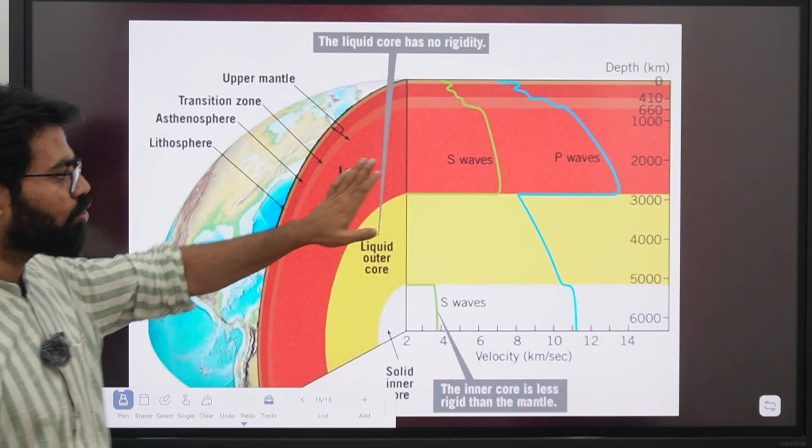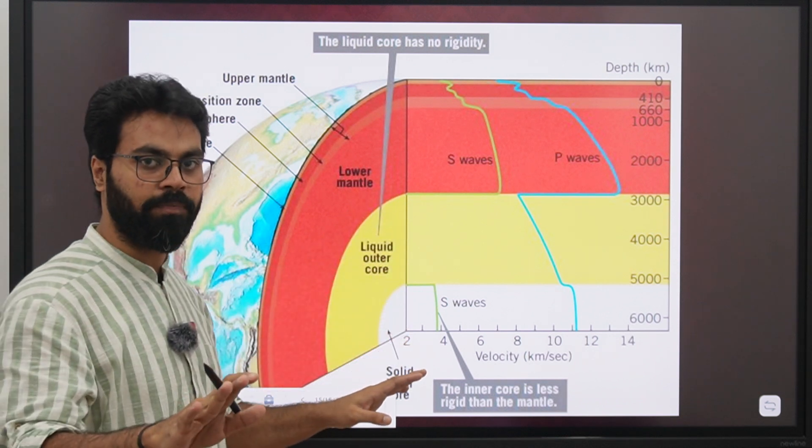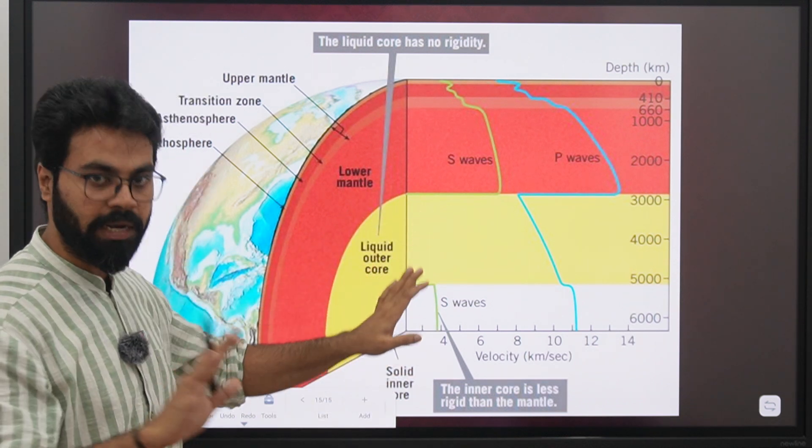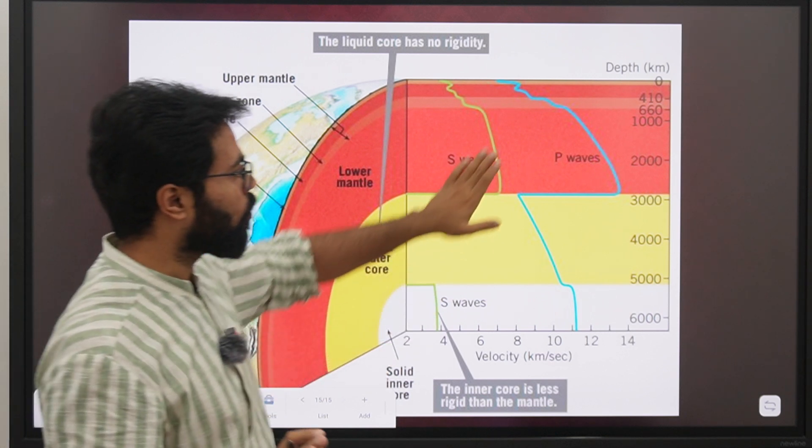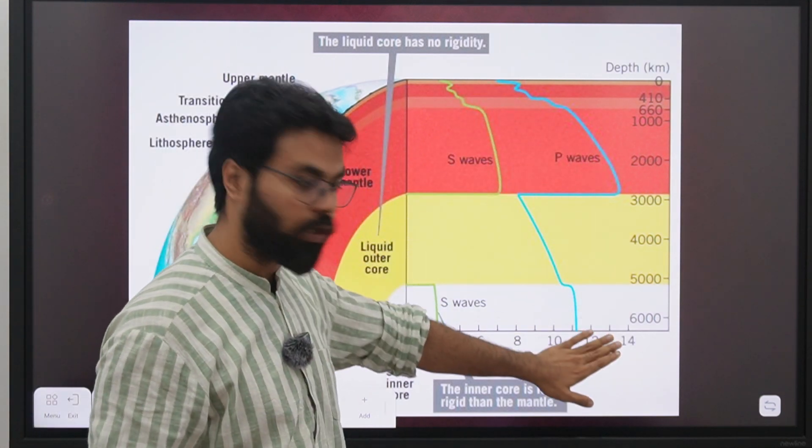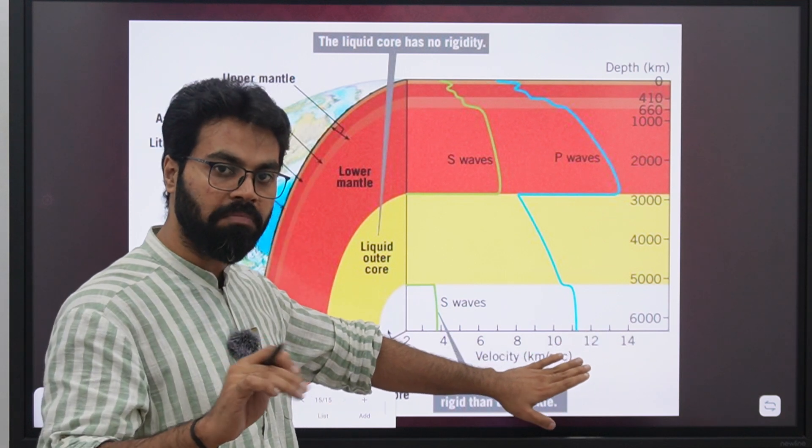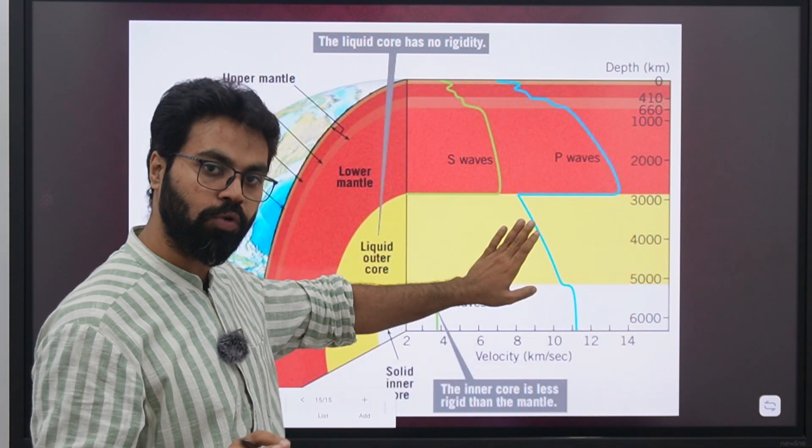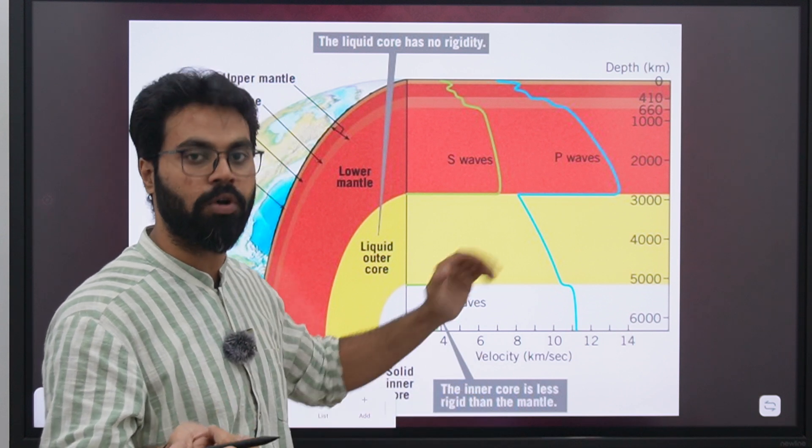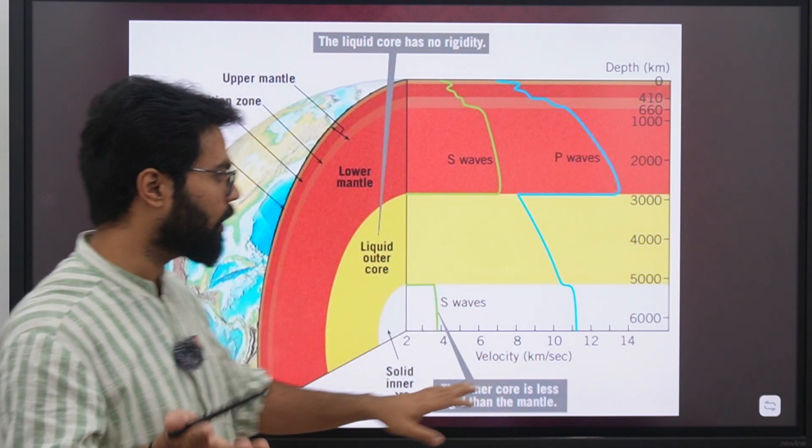Now we can see the diagram. We all have seen this diagram - I don't think any student who has studied geology hasn't seen this diagram. But we don't understand its importance. Let's see here: the P-wave velocity in the mantle is going to 14, but in the inner core it's maximum 11.3. Yes, the outer core will be more. Why? Outer core being liquid, inner core being solid.